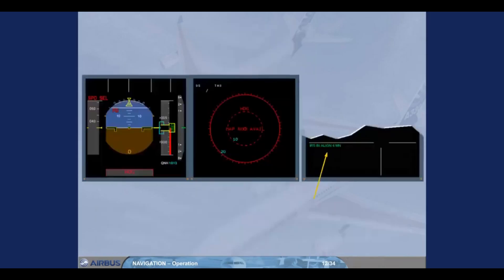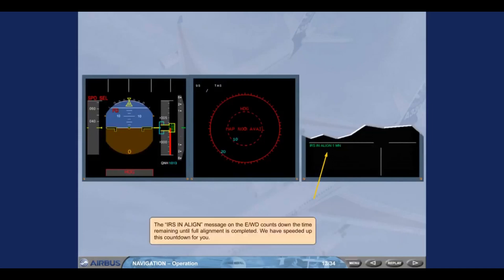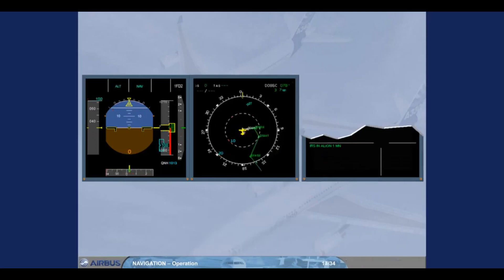The IRS INIT message on the engine warning display counts down the time remaining until full alignment is completed. Once IRS alignment is complete, all PFD and ND information is available. The IRS INIT line message disappears from the engine warning display memo. For the remainder of a normal flight, no further pilot input is required on the ADIRS system.